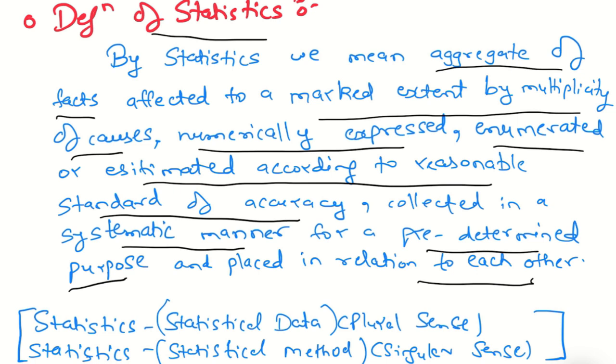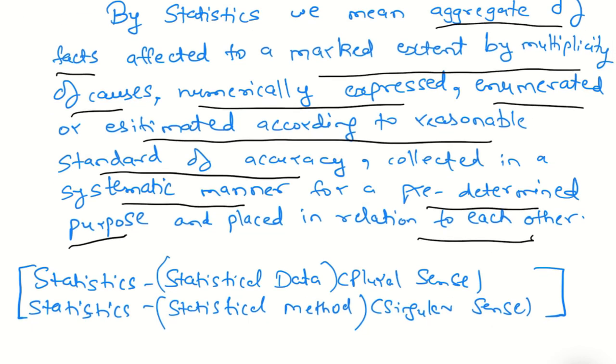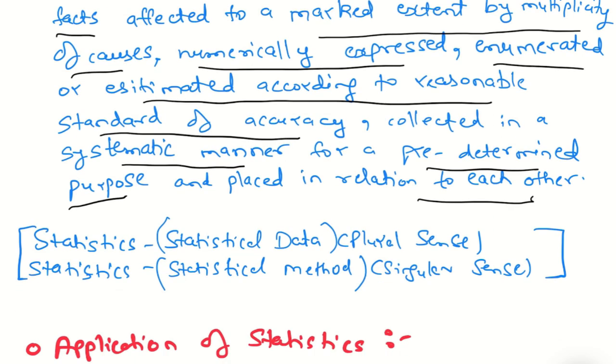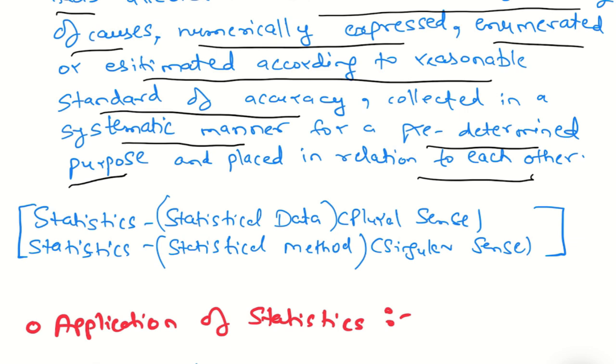All of this depends on the multisibility of causes. Numerically expressed means we can write the statistics in numbers. We can talk about age, production of rice, quality, or salary in rupees. All the data is numerically expressed. Enumerated means actual count. For example, rainfall in Mumbai in June was 20 inches, this is actual data we have found.